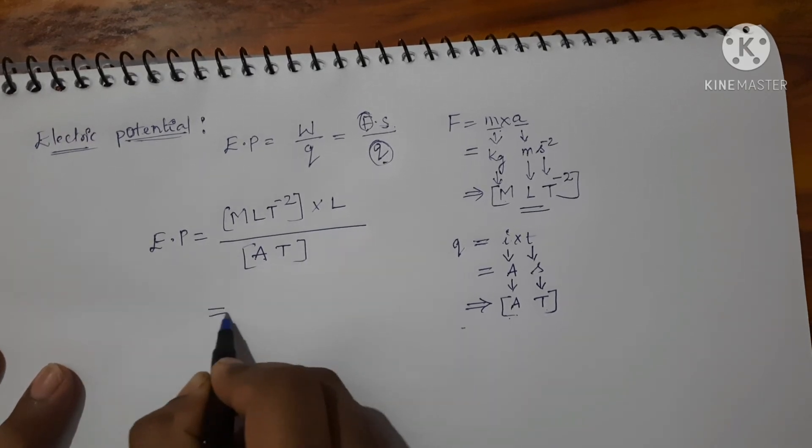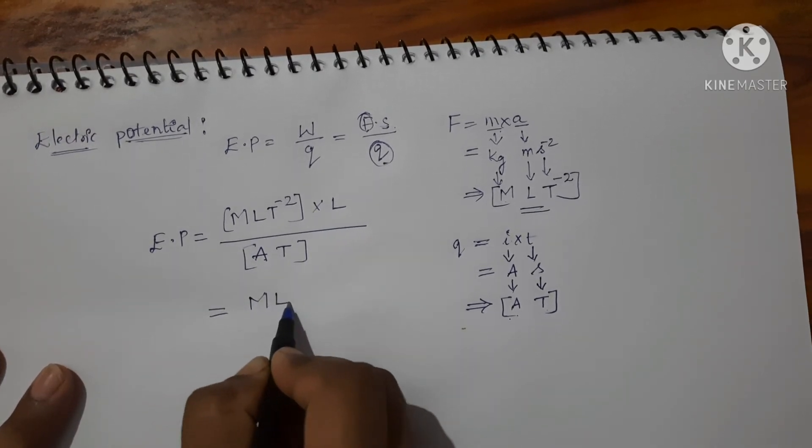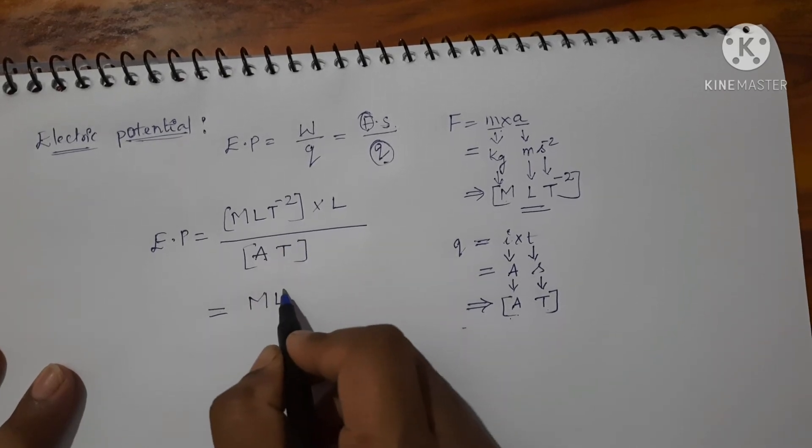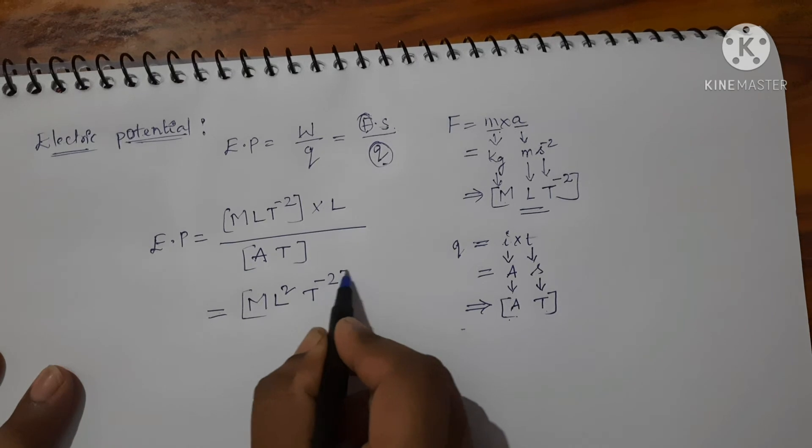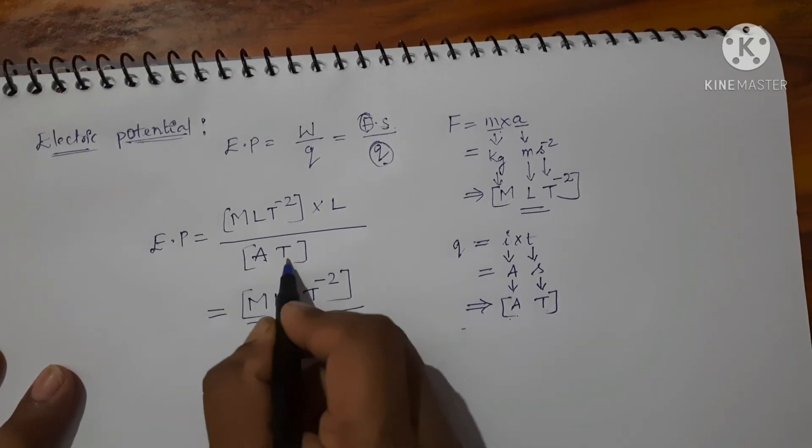Now simplify this equation: MLT power minus 2 upon here this AT.